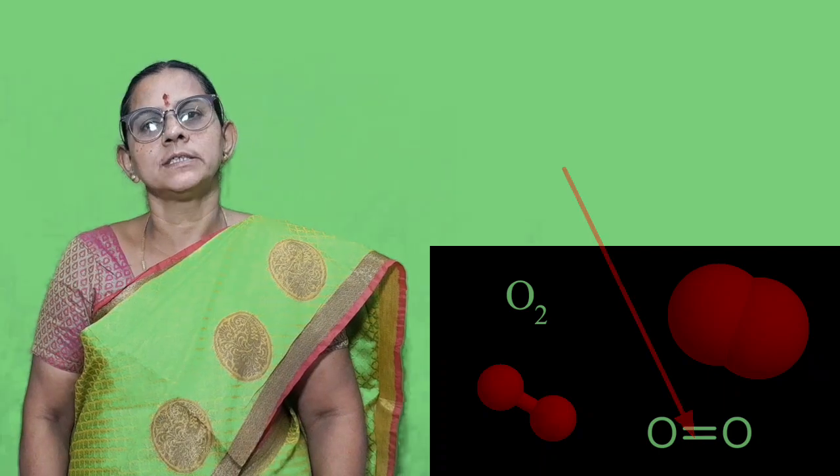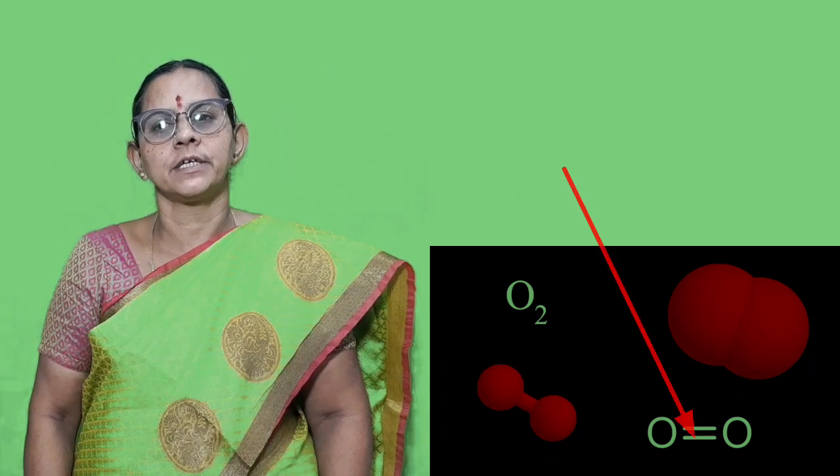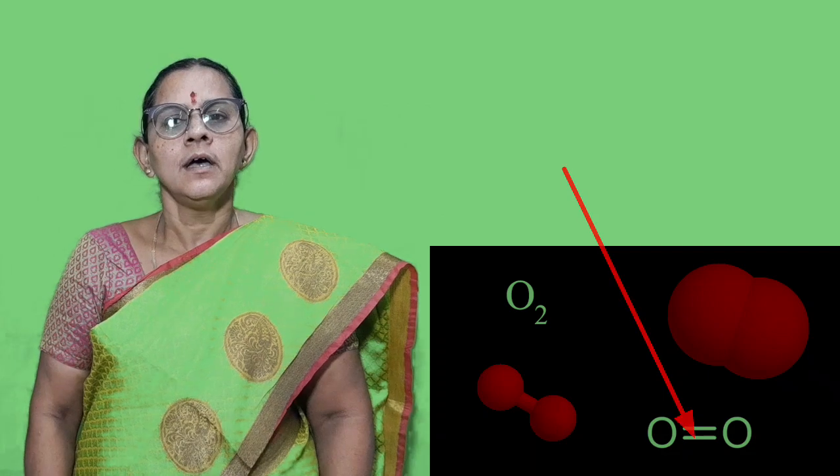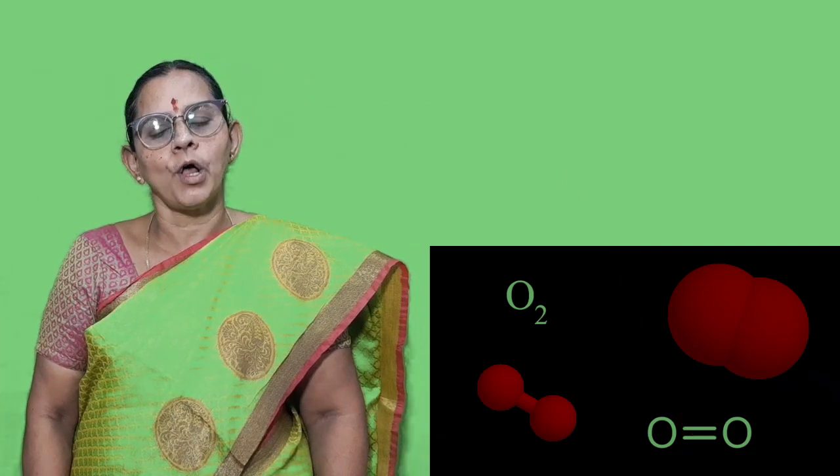Chemical bond is nothing but the electrostatic force of attraction that binds the atoms together to form molecules. The Lewis approach of electrons explains how chemical bonds are formed. Why are atoms and molecules formed? How are the molecules formed — that is a bond formation.